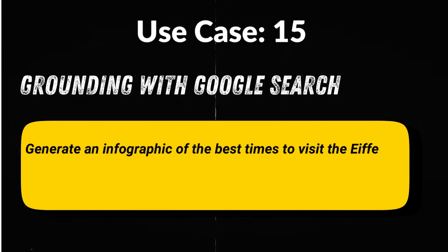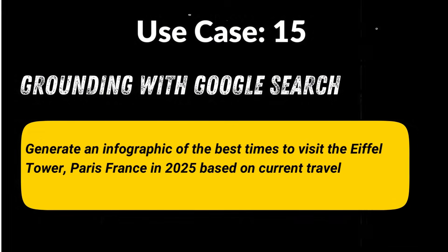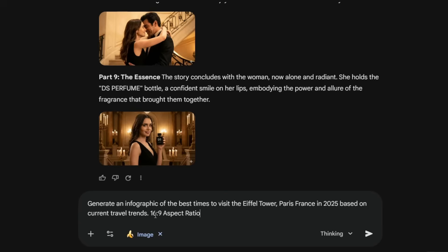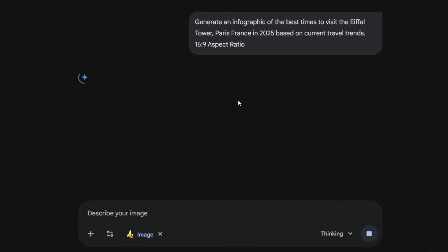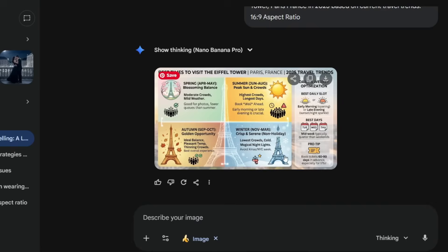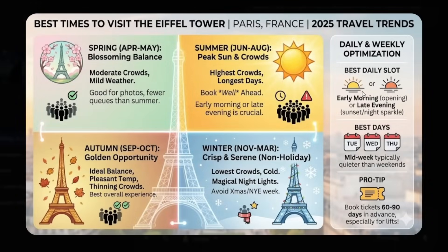Use case 15: This one connects Nano Banana Pro to real-time Google search data. Prompt: 'Generate an infographic of the best times to visit the Eiffel Tower, Paris, France, in 2025, based on current travel trends.' Instead of guessing, the model pulls real-world trend signals and builds a fact-grounded, up-to-date infographic you can actually rely on for content and planning.